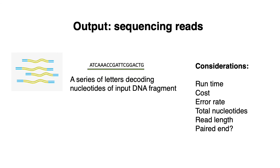Technologies like Illumina sequence very short reads compared to PacBio and Nanopore, which can generate reads of hundreds of thousands of base pairs. This matters for genome assembly — since sequencing technologies can only sequence fragments of the original genome, you have to piece together your short sequences back into the original genome sequence. That process is generally much easier when using longer-read technologies compared to shorter-read ones.